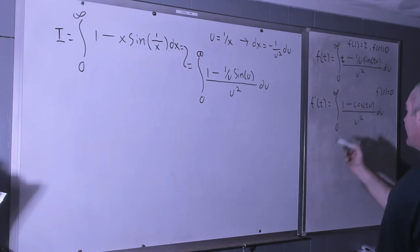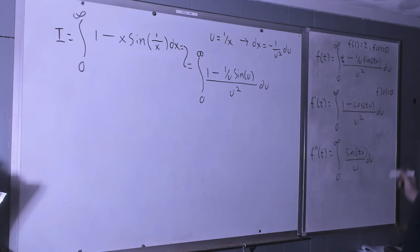So now let's take another derivative with respect to t using the Leibniz. f double prime plus two, integral from zero to infinity, sine t u over u. This is equal to pi over two for all t greater than zero. I've shown that many times on this channel so hopefully you guys just all believe me.